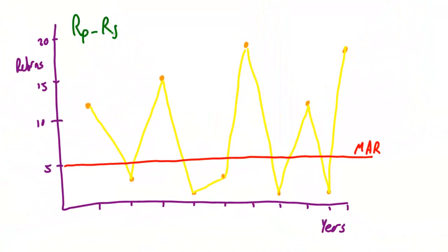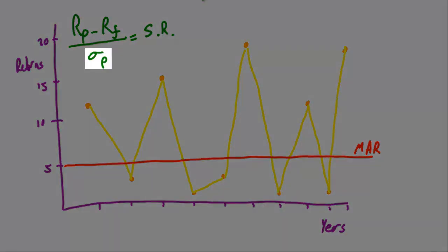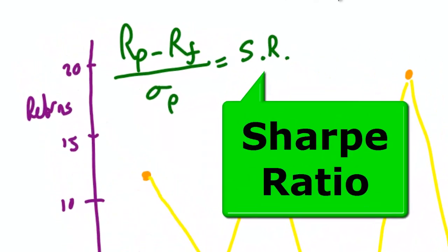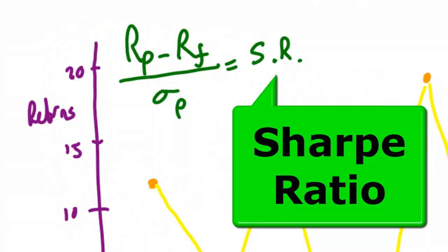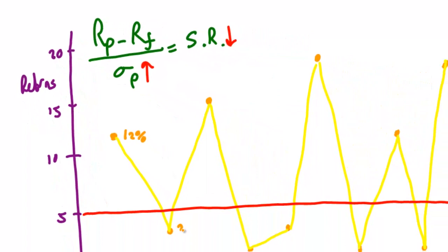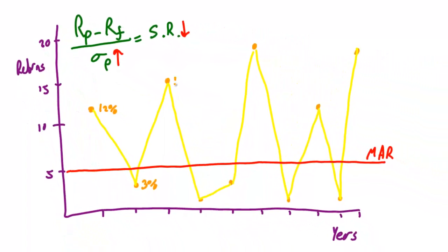Markowitz and then later William Sharpe in 1966 used total deviation before computers really got going, because it was much easier to calculate. But with the Sharpe Ratio, this high upward deviation gives us a low Sharpe Ratio, even though those high returns are a good thing.